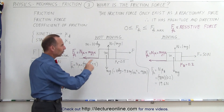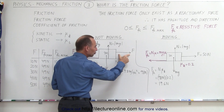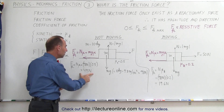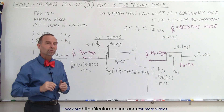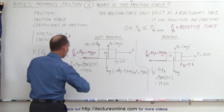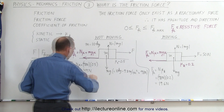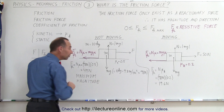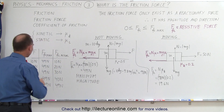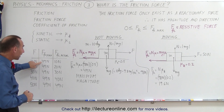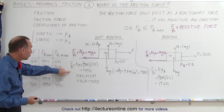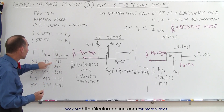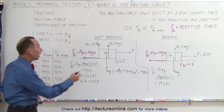Now what happens when I pull on this object with a force of 10 newtons? Does that mean the friction force is still 49 newtons? The answer is no. What that 49 newtons represents is the maximum magnitude that the friction force can have. So if we pull with 10 newtons, the maximum the friction force can be is 49 newtons, but the reactionary friction force is only going to be 10 newtons — it matches the force that caused it in the first place.